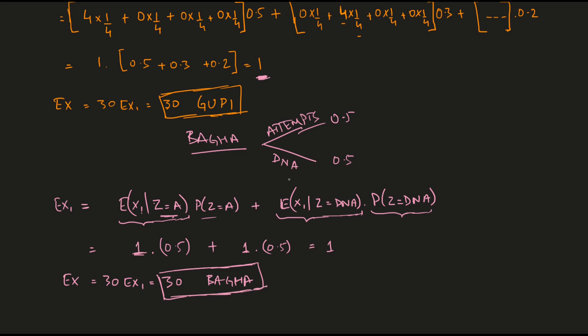So it turns out that both strategies yield the same expected score — whether you leave the question with 50% probability or attempt it with 50% probability, your expected score is the same. That is why the answer for this question is option D.